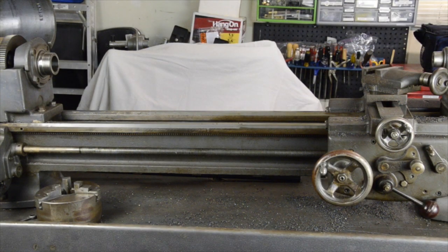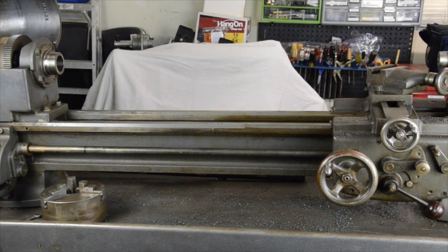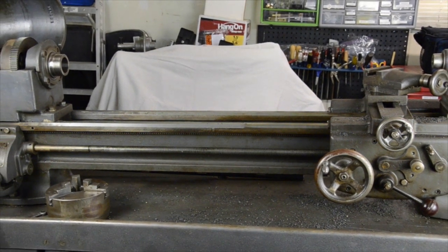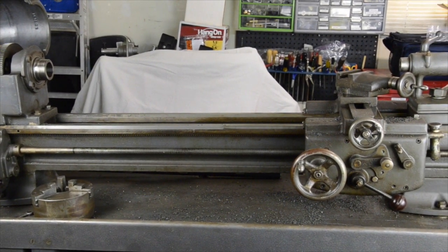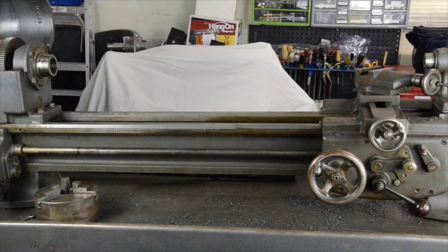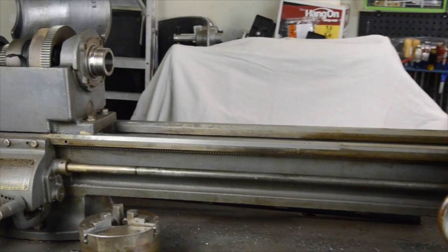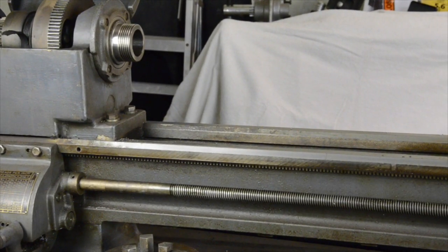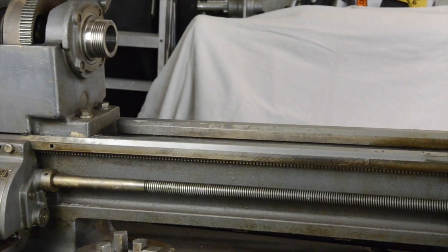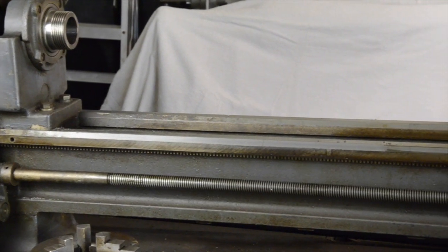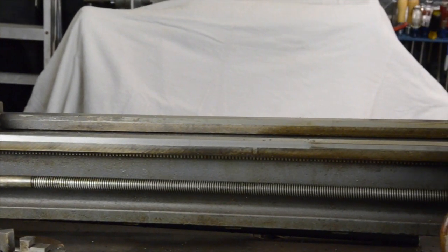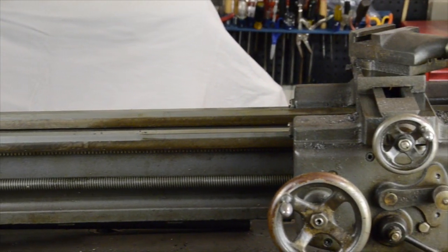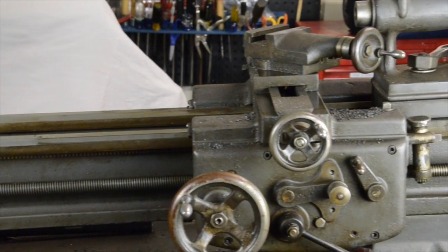One other thing that was important to me was having a fairly long bed. And you can see that you've got 36 inches between centers. It just makes it more pleasant. You can work without being all crammed in. And I mean, it's like having, after working on that 17 inch lathe, this is like wide open spaces, lots of room.